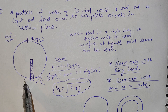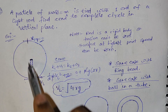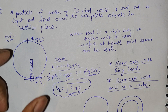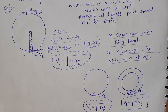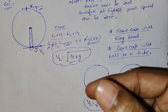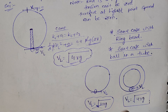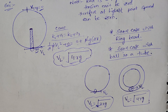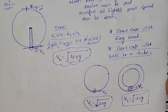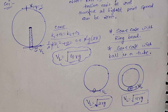Apply conservation of mechanical energy from lowest to top. Initial KE = (1/2)mv_lowest², initial PE = 0 (reference), final KE = 0 (v_top = 0), final PE = mg(2r). So velocity at lowest point = root(4rg). This same condition applies for a ring on a rod or a ball inside a tube — to complete the circle, lowest point velocity = root(4rg).